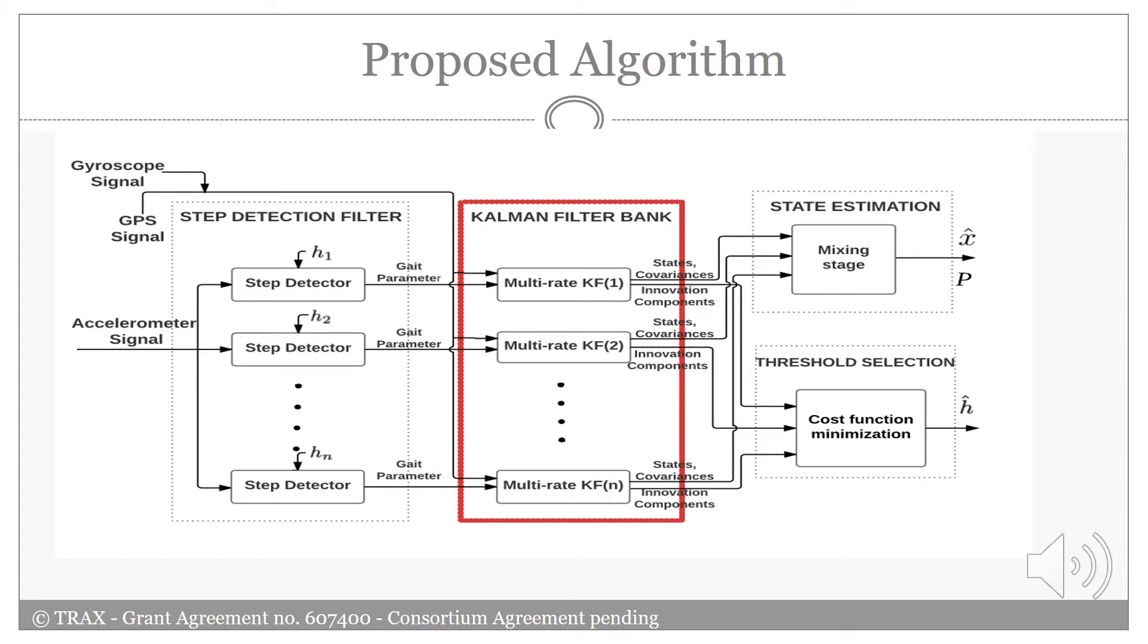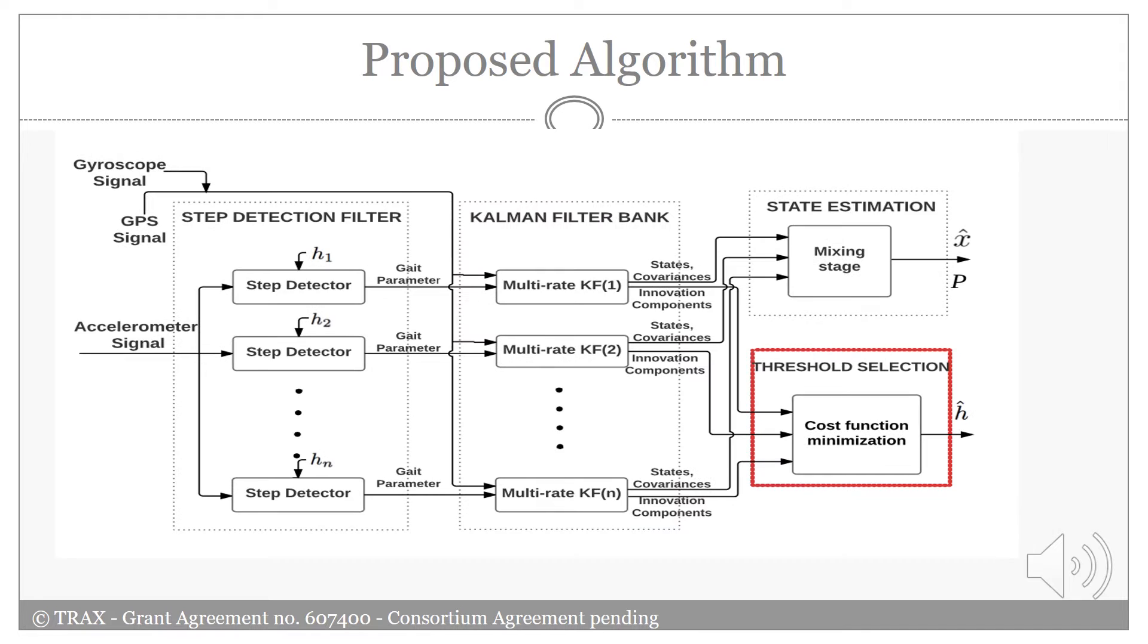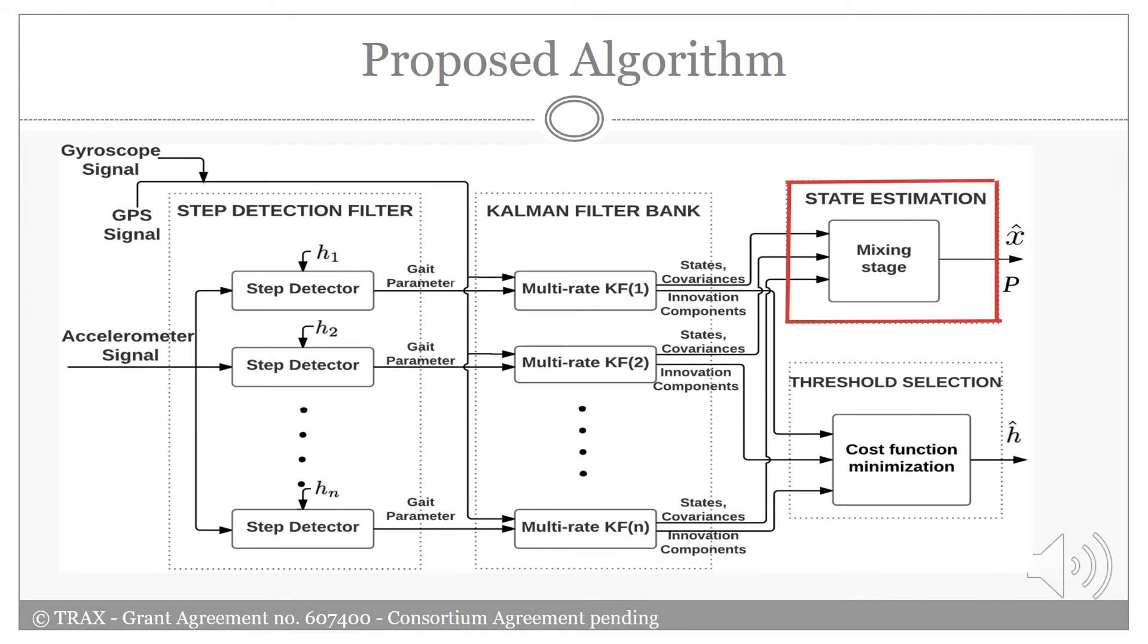The filters process GPS position estimations and gyroscope measurements. The results of these filter banks are then passed to the state estimation and threshold selection block. The threshold selection block is processing N threshold-dependent innovation vectors and corresponding innovation covariances to obtain a threshold estimate for the step detectors based on minimizing some likelihood cost function. In the state estimation block, the N estimated states together with the error covariances and other filter parameters are input to the mixing stage that produces the final filter output consisting of a state vector estimate and corresponding error covariances.